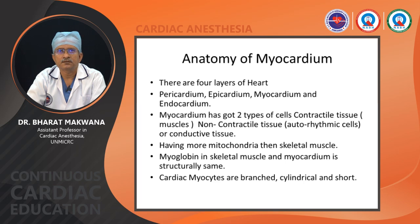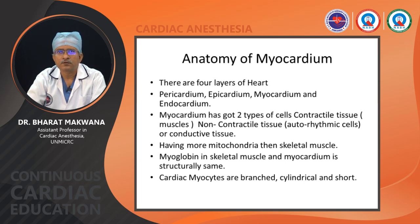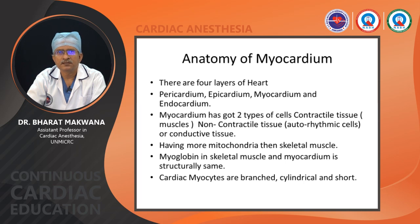There are four layers of the heart: pericardium, epicardium, myocardium, and endocardium. The myocardium has two types of cells — contractile tissue and non-contractile cells. Contractile cells make up 99% and non-contractile cells 1%; the non-contractile cells have auto-rhythmicity and conductivity, giving them electrical properties.